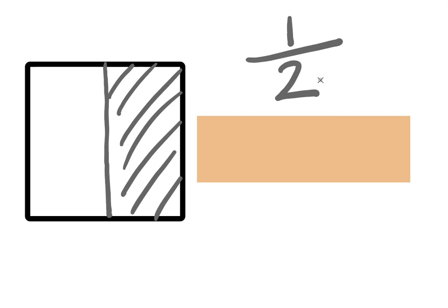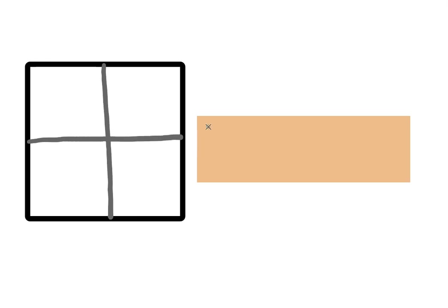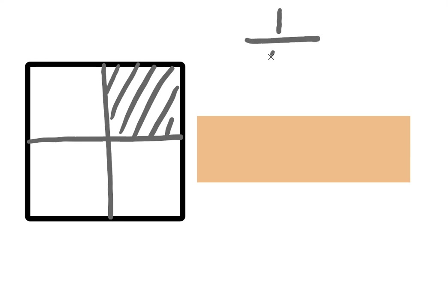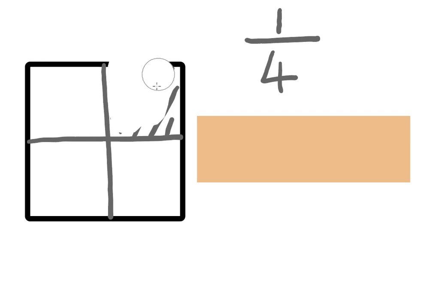We also looked at cutting it into four — do you remember what that would be called? One part of a shape that was cut into four, all parts the same size. Does it matter which of those quarters I'd coloured in? No, it doesn't, because they're all the same size. Well done, guys — I could colour in that one instead.